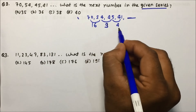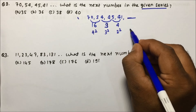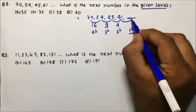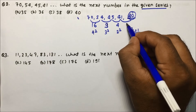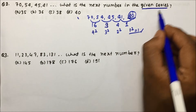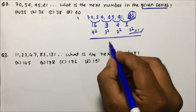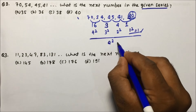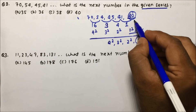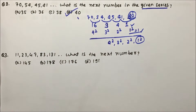See how these differences work: 16 is 4 squared, 9 is 3 squared, 4 is 2 squared. So the next difference will be 1 squared, which is 1. So the next number should be 41 minus 1 = 40. The pattern is differences of 4², 3², 2², 1². Option D is the correct answer.